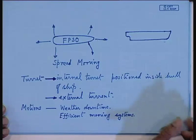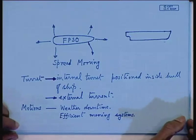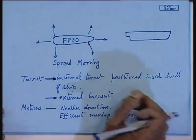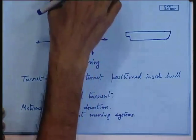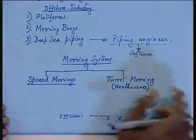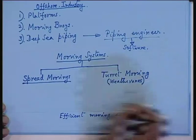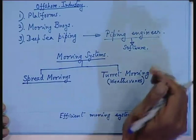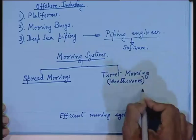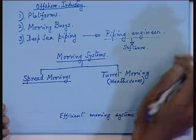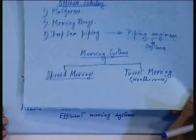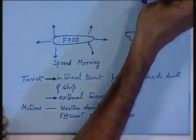Mooring analysis is very critical in offshore engineering. The three types of analysis are: static, quasi-static, and dynamic. I will start with static analysis. Before that, let me describe the spread mooring system and the turret mooring system.